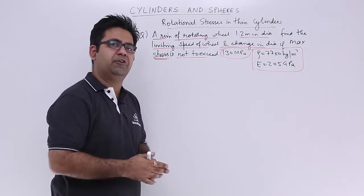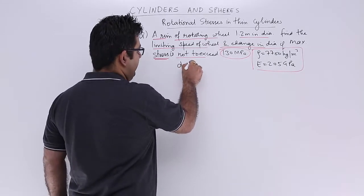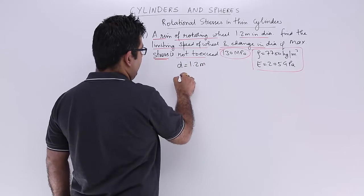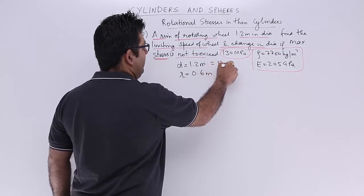A pretty straightforward question. Your diameter is 1.2 meters, so radius would be 0.6 meters, which is 1200 millimeters diameter.